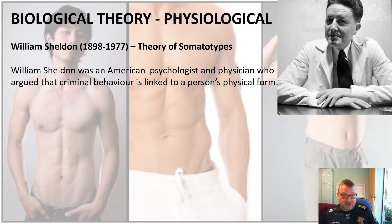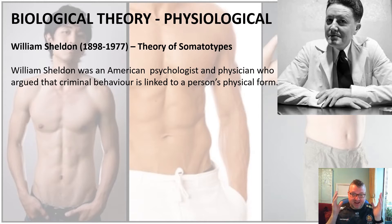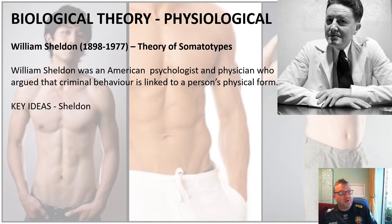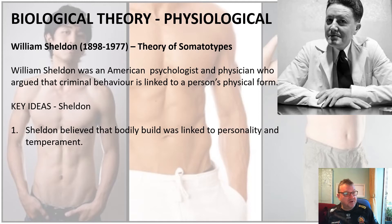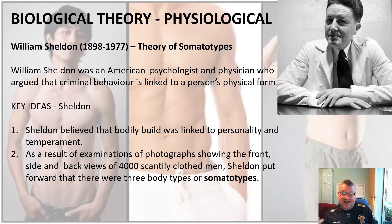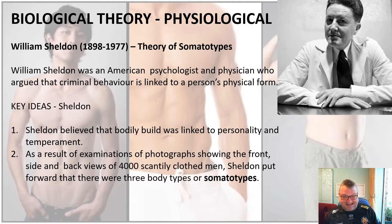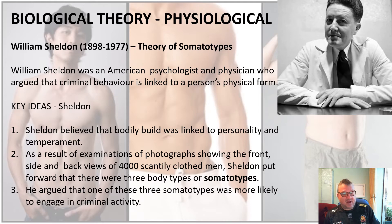Sheldon was an American psychologist, a doctor, a physician, and he argued that criminal behaviour is linked to a person's physical form. So whereas Lombroso was looking at atavistic physical traits, Sheldon is looking at body shape. He believed that the bodily build of someone was linked to personality and temperament. He looked at photographs showing the front, back, and side views of 4,000 scantily clothed men, and from these photos put forward that there were three different body types, or somatotypes.